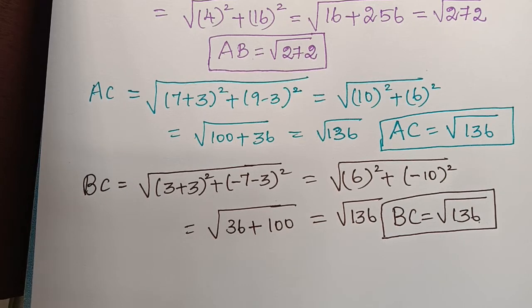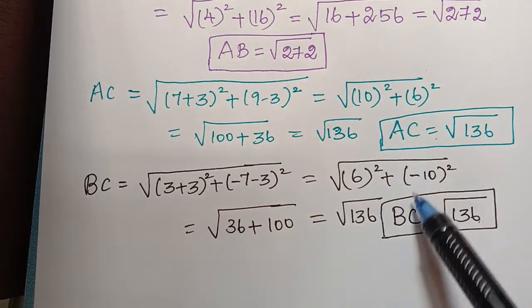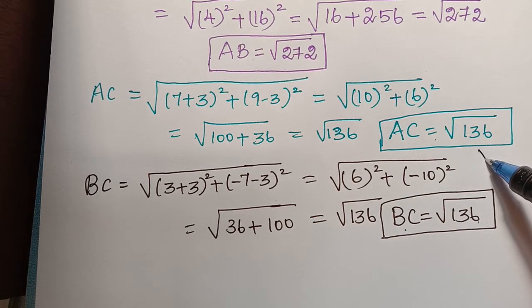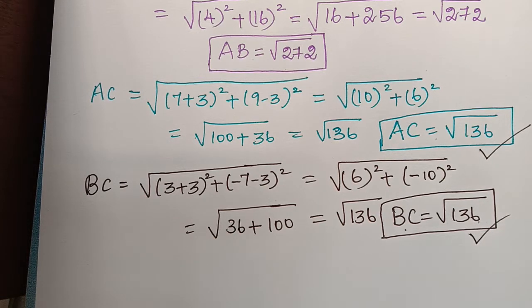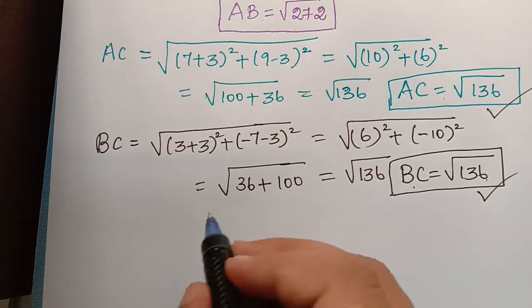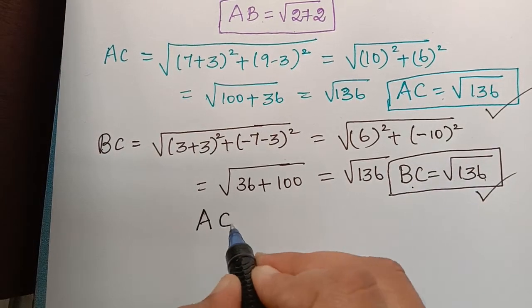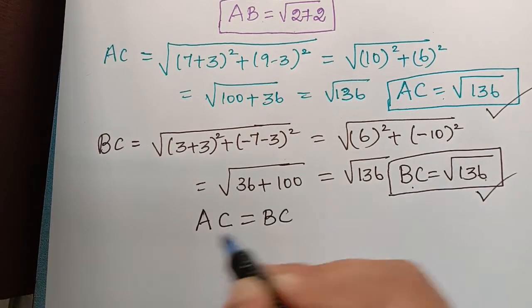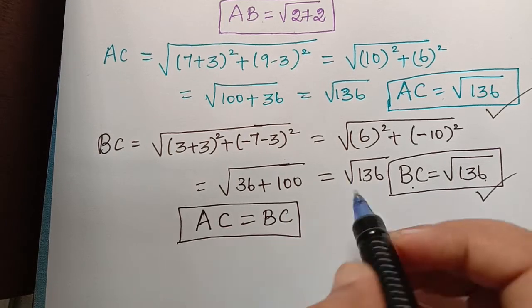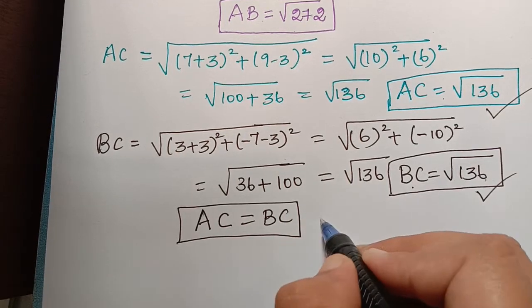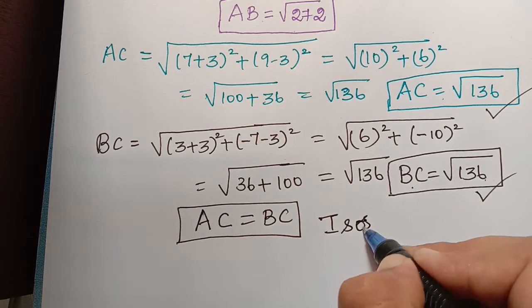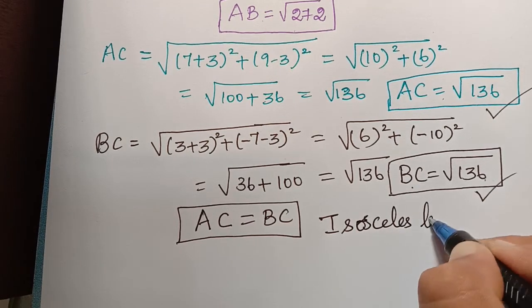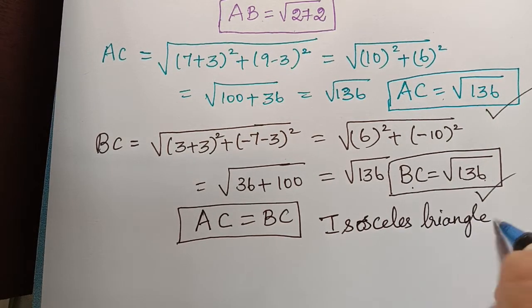Now when we compare all three distances, we observe that AC = √136 and BC = √136. Therefore two of the sides are equal: AC = BC, which implies that the given three points form an isosceles triangle.